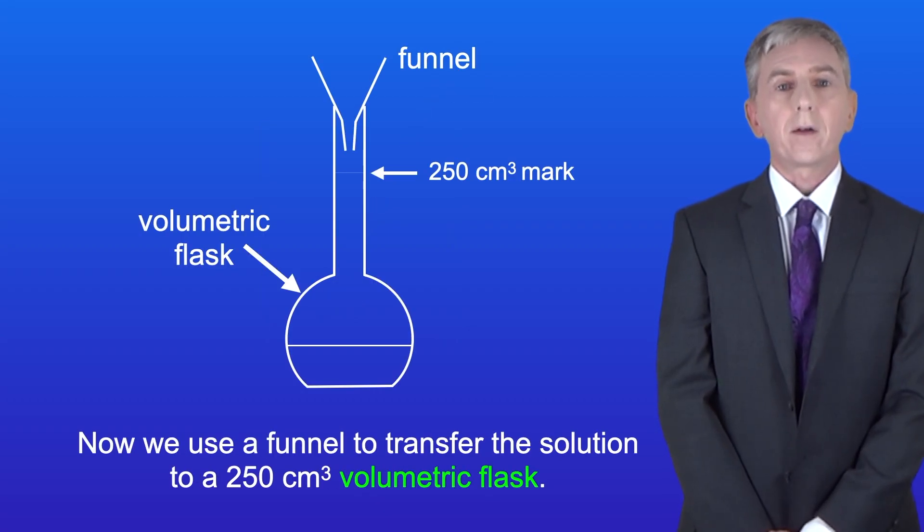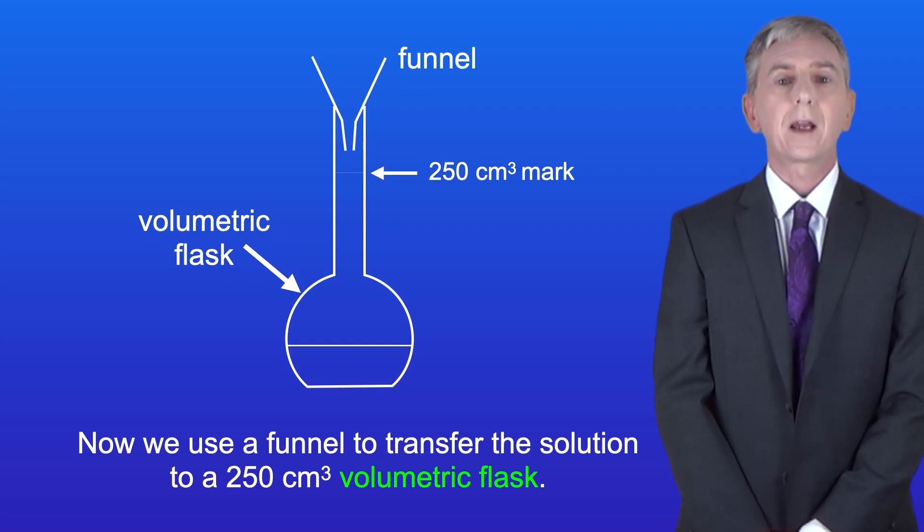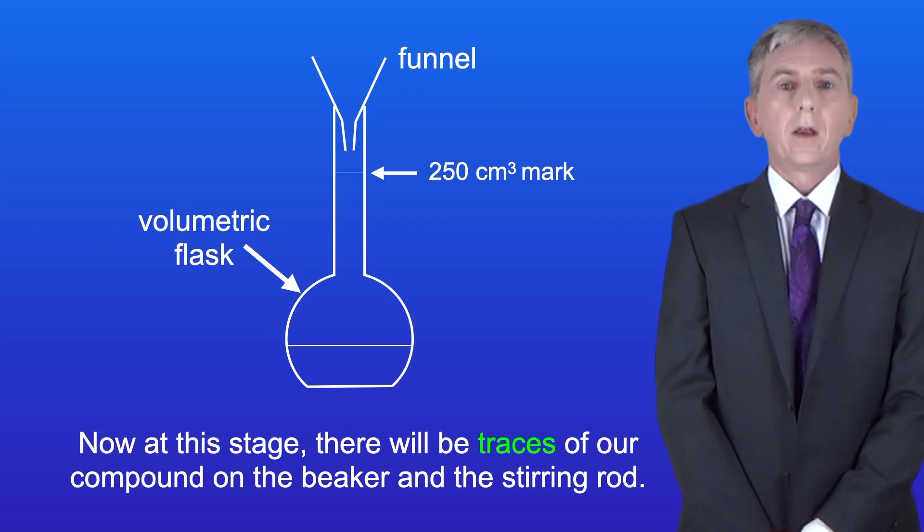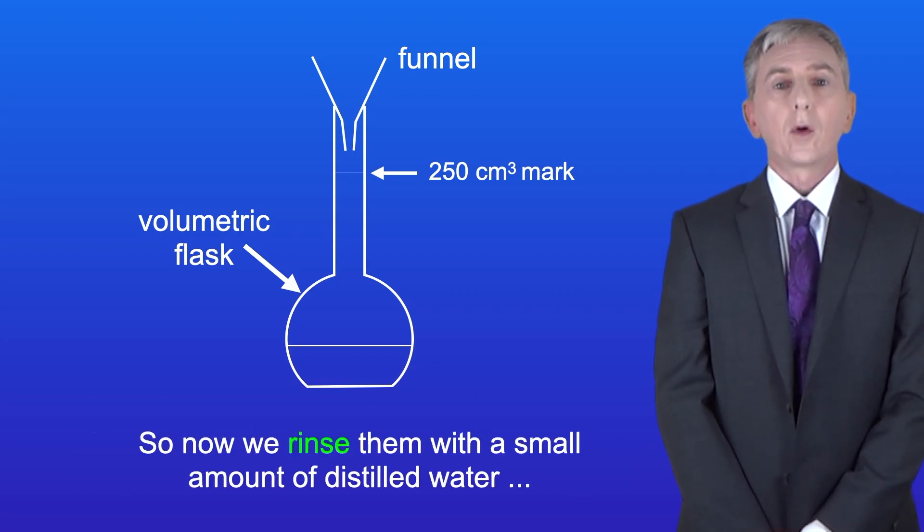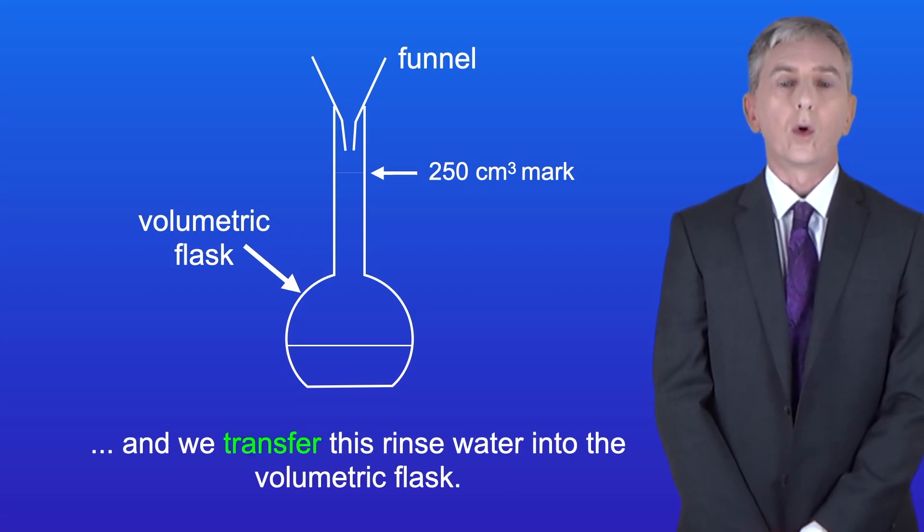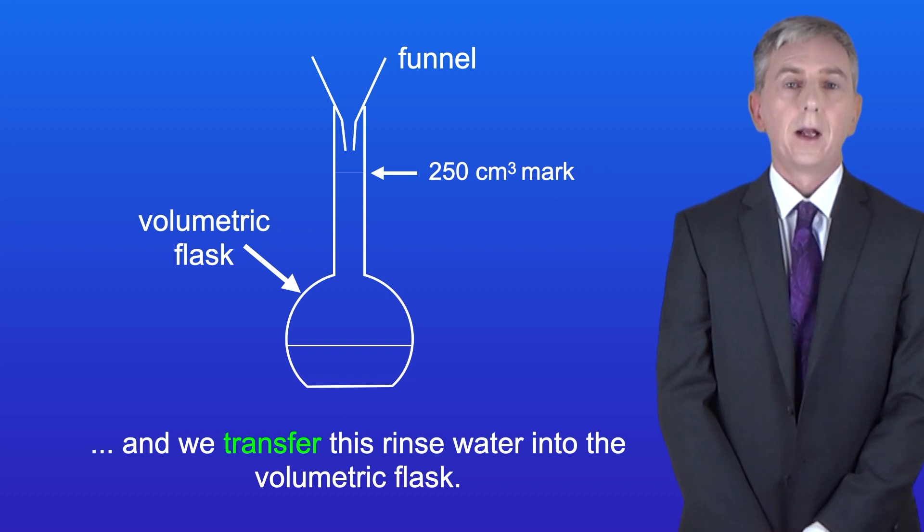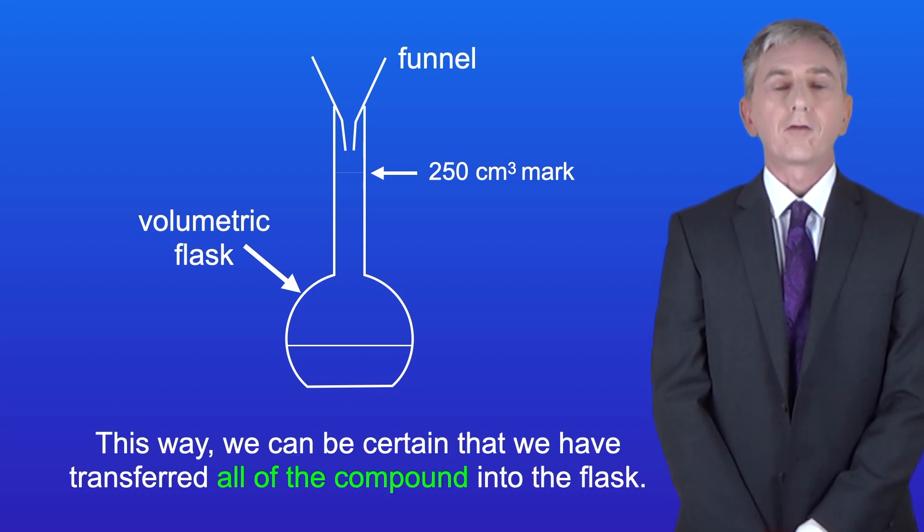Now we use a funnel to transfer the solution to a 250 centimeters cubed volumetric flask. Now at this stage, there'll be traces of our compound on the beaker and the stirring rod. So now we rinse them with a small amount of distilled water, and we transfer this rinse water into the volumetric flask. This way, we can be certain that we've transferred all of the compound into the flask.